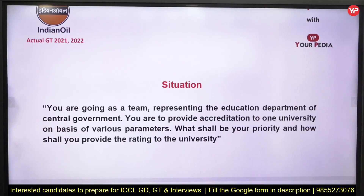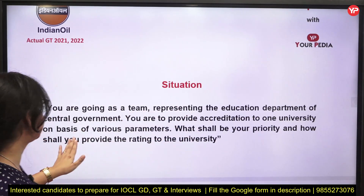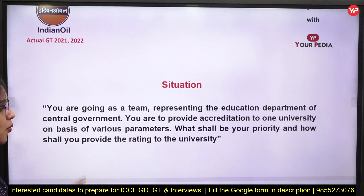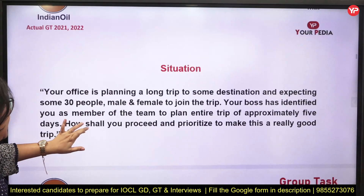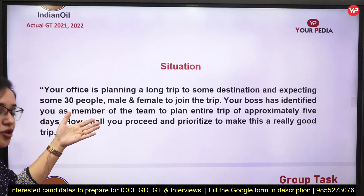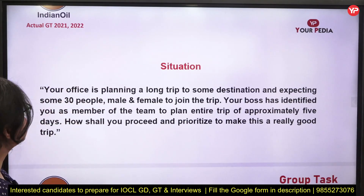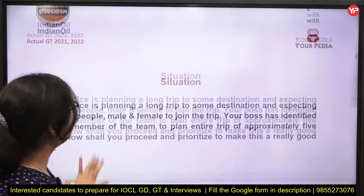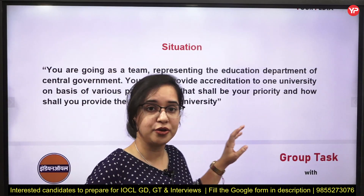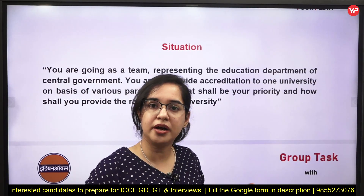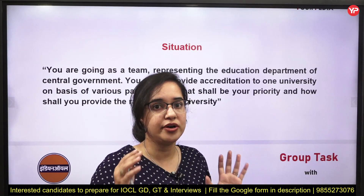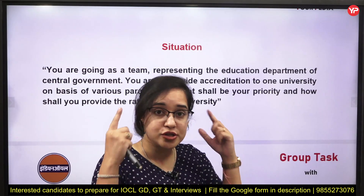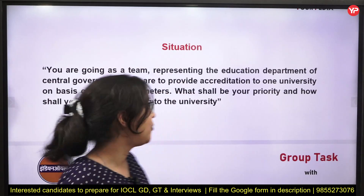You are going as a team representing the education department of the central government, providing accreditation to one university based on various parameters — what shall be your priority and how shall you rate the university? You have to tell the different dimensions on which you'll rate the university. This is similar to NAAC grading — you may have been a student when your institute was being graded by NAAC, so those experiences can give you good pointers.